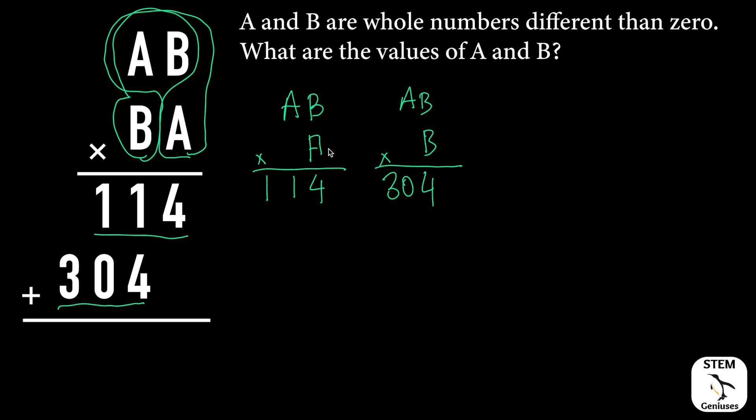So we see that in these two separate partial multiplications, A times B gives 4 in the unit digit, and B times B gives 4 again in the unit digit. So we need to start from the most restrictive part of the question. Most restrictive means most limited - you have not many options.